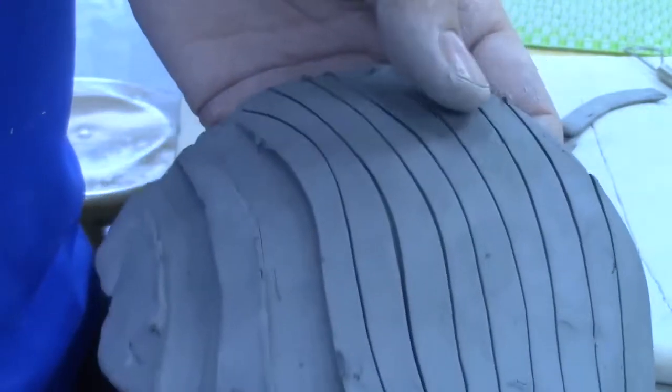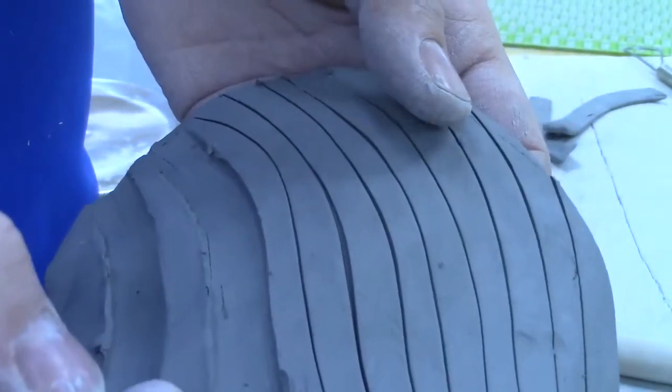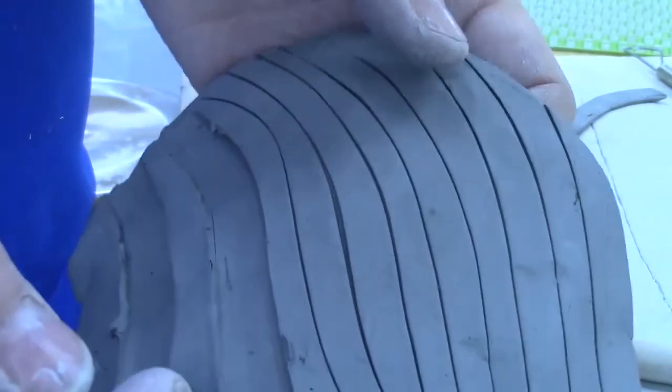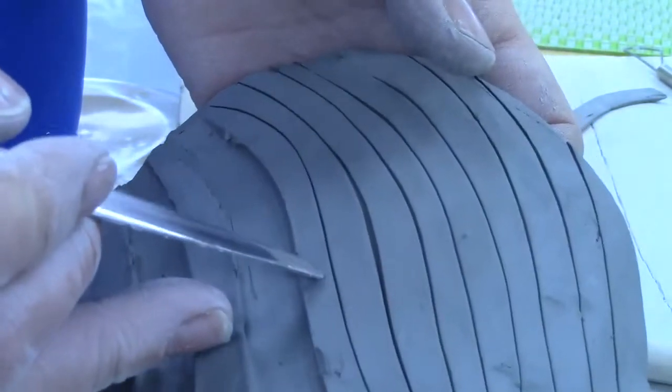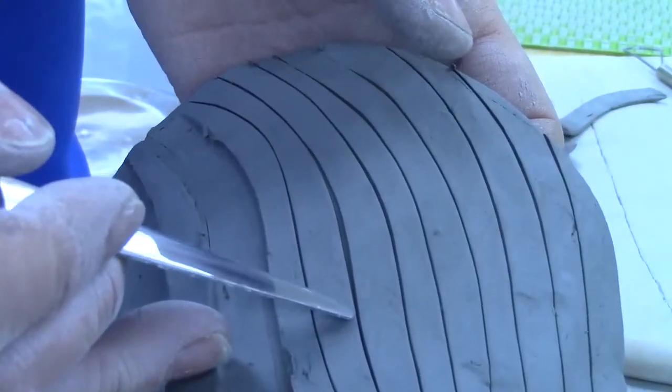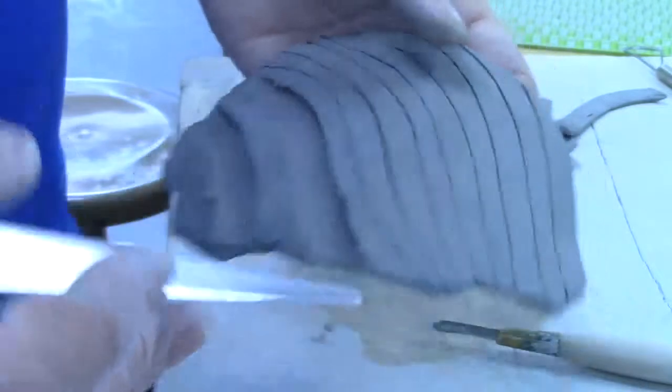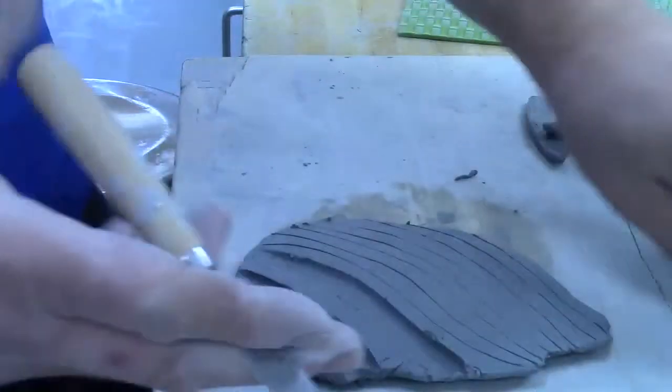Another way we can do it is actually cut those lines at an angle, so I'm going to take maybe a knife or maybe a loop tool and cut at an angle along those lines.